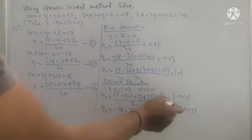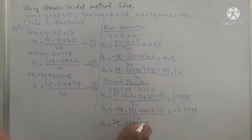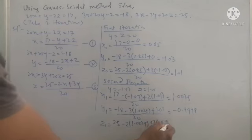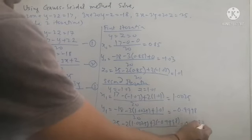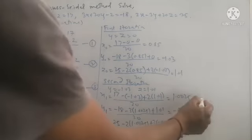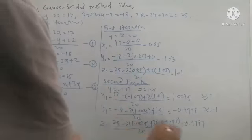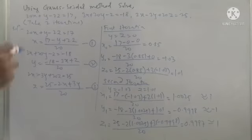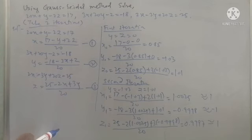For z1, using x = 1.0025 and y = -0.9998 in equation 3: (25 - 2×1.0025 + 3×(-0.9998)) / 20 = 0.9997. We observe x1 ≈ 1.0025, y1 ≈ -1, and z1 ≈ 1. Since we were asked for only two iterations, the roots of this system of equations are x = 1, y = -1, and z = 1.0025.